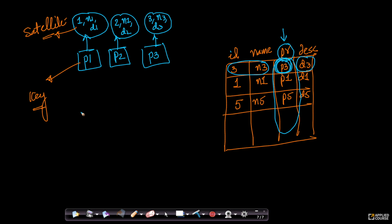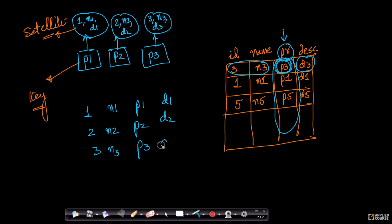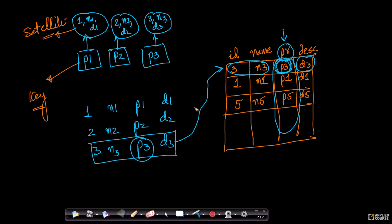It doesn't happen that the satellite data stays behind. In the initial table, we have: 1, N1, price 1, description 1; 2, N2, price 2, description 2; 3, N3, price 3, description 3, and so on. Now when I realize that P3 is the smallest price, when I move that row to the top, along with P3 I also move all of the satellite data with it. That's why it's called satellite data — because the satellite data is moving along with the key, wherever the key goes.